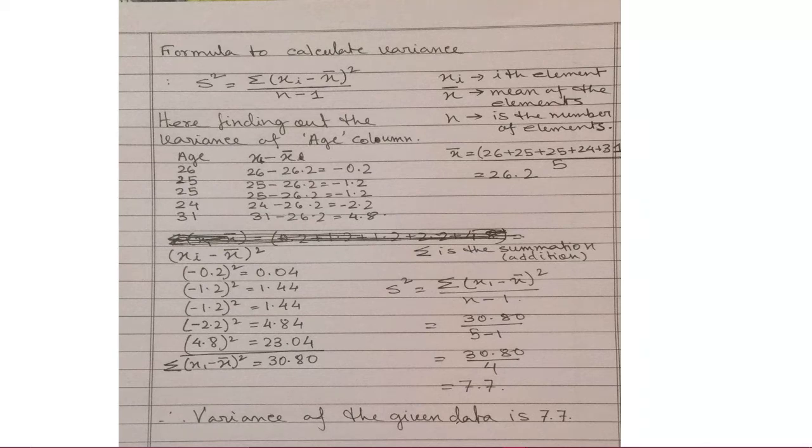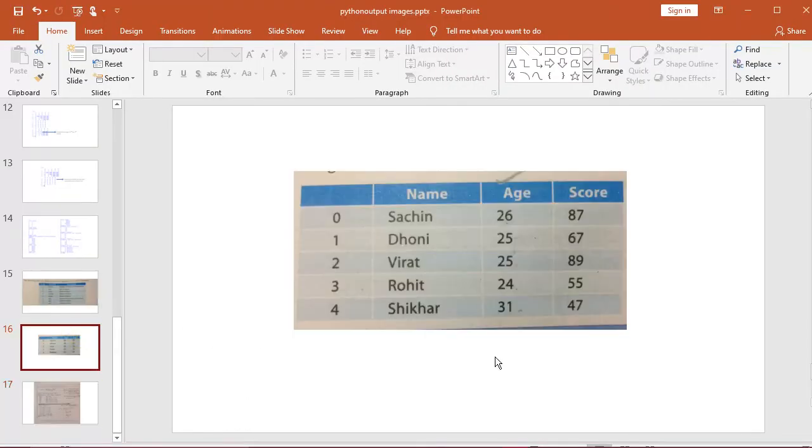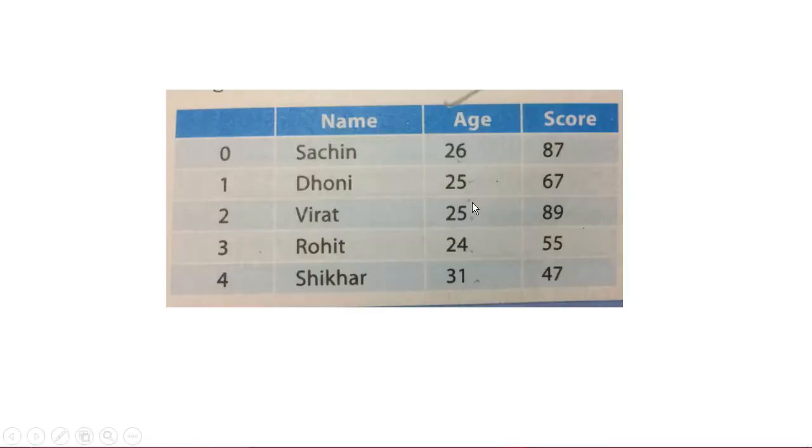So, what can you do? You can find out the variance of other column also where it is given the score column 87, 67, 89, 55 and 47. This set of data you can find out because I have considered the same table also out here. I will show you this table once more. This is the table that I have considered. And this is the column I have considered out here. So, each column 26, 25, 25, 24 and 31. You can find out 87, 87, 67, this column.